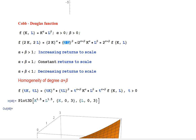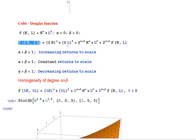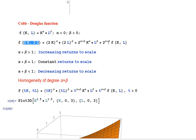We can pull out 2 to the power alpha from the capital term and 2 to the power beta from the labor term. The result is 2 to the power alpha plus beta, multiplied by K to the power alpha times L to the power beta, which is our original F(K,L). So if we compare both sides, doubling the inputs causes output to grow by the factor 2^(α+β).